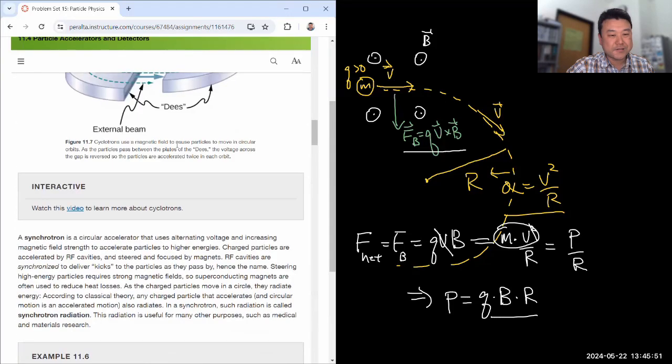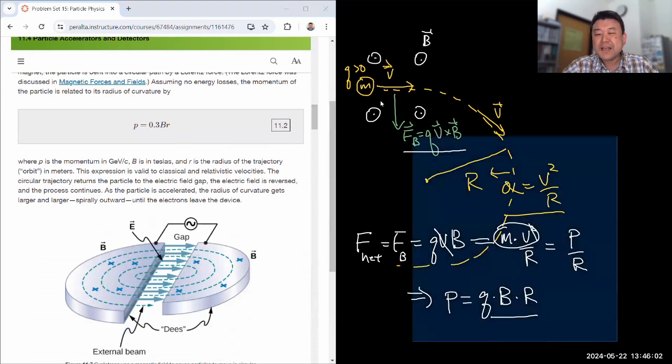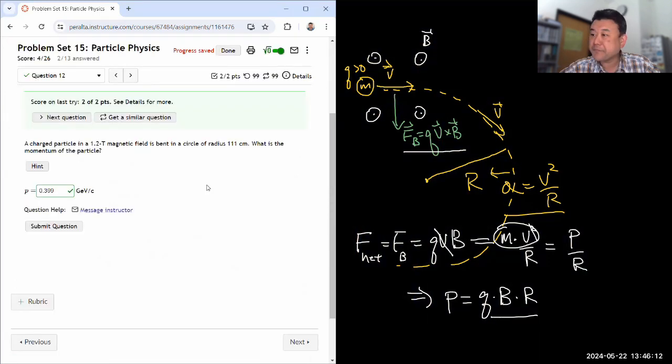I think what the question expects you to do is just to use this—1.2 and convert R given in centimeters into meters, plug numbers in. Yeah, I guess you could do that, but I don't like it. I like this better. Yeah, so that's question 12.